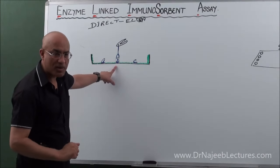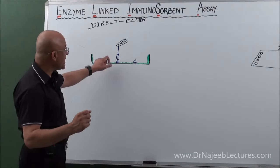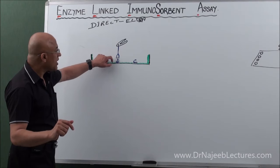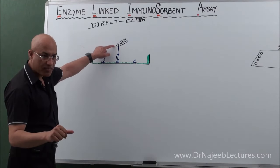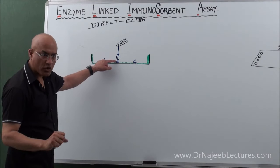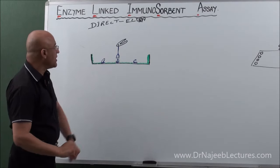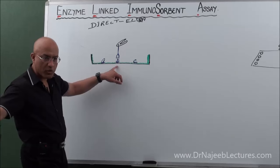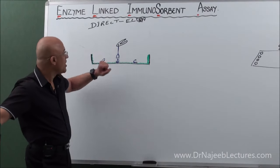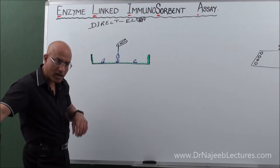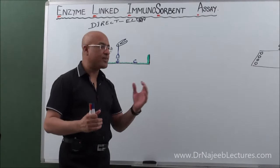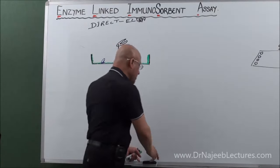Another disadvantage: if there is only one antigen molecule and one antibody reacts, only one enzyme is held there, so very little color is produced — the signal is very weak with no amplification. Also, for every different antigen you are looking for, you need a different type of enzyme-linked antibody. These problems are solved by a modification of this format.